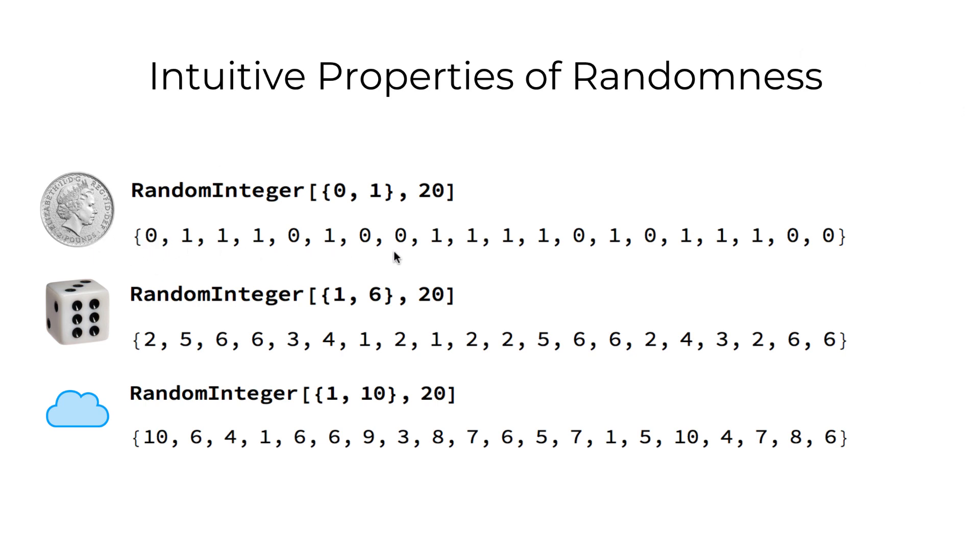Each bit encoding an outcome, assuming tails is 0 and head is 1, a typical random run may look like this.